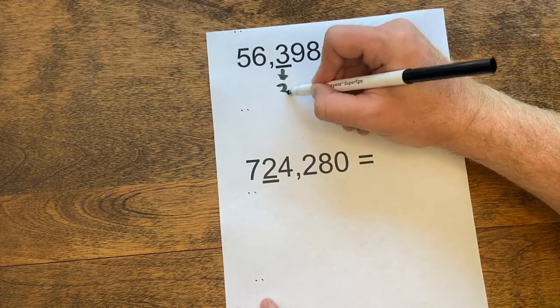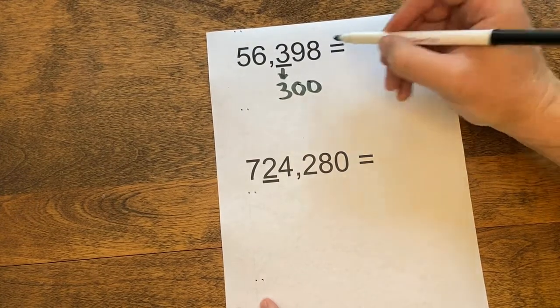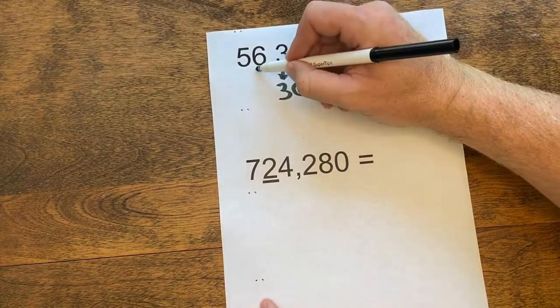So the 3 here, if we pull it down, is in the 100 spot. We're going to add zeros in the tens place and the ones place, so that 3 really has a value of 300. Let's do the same thing for the 6.